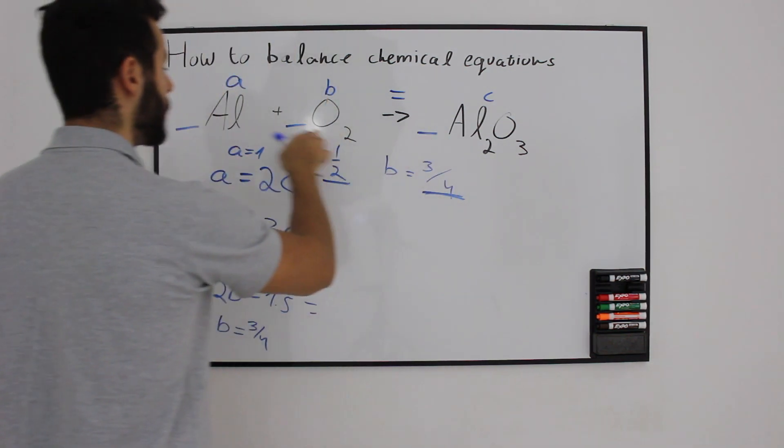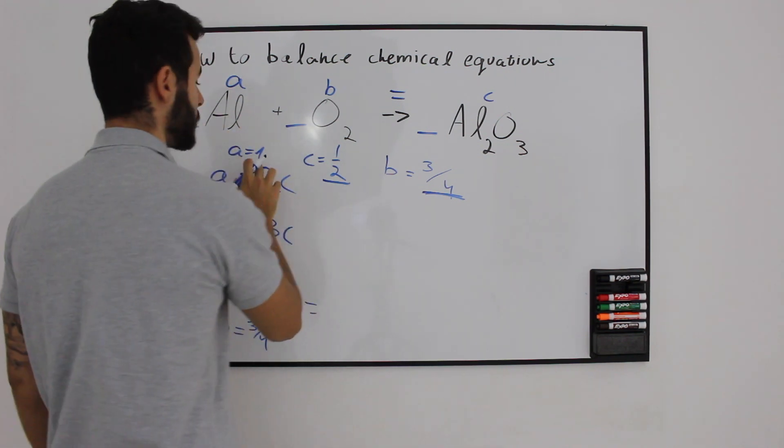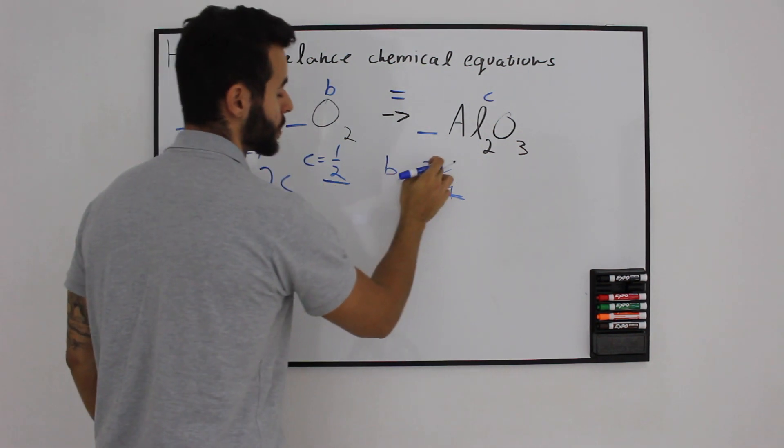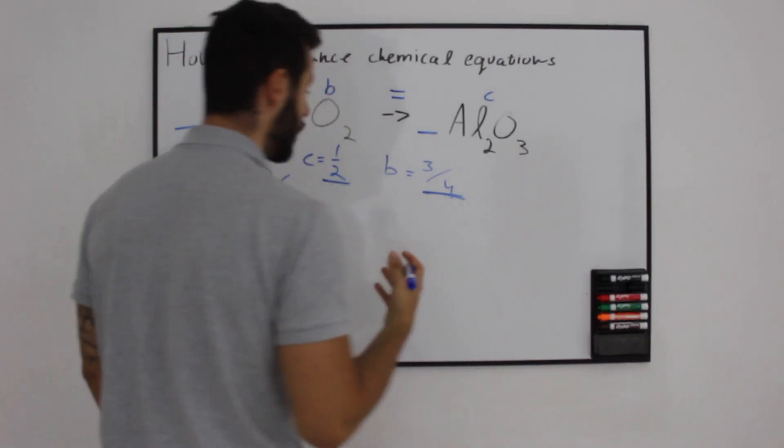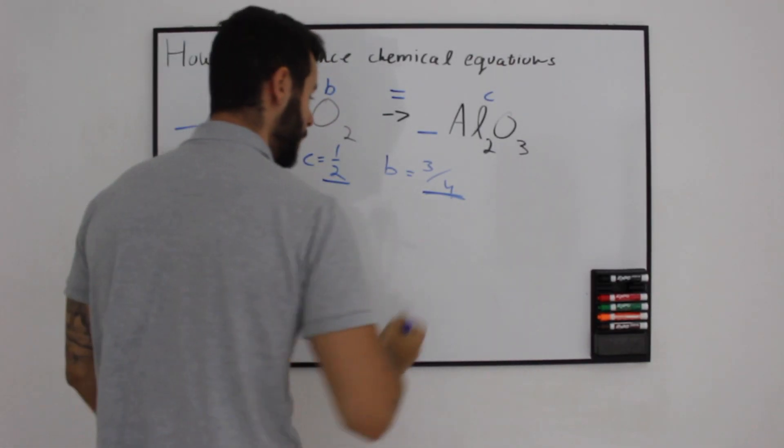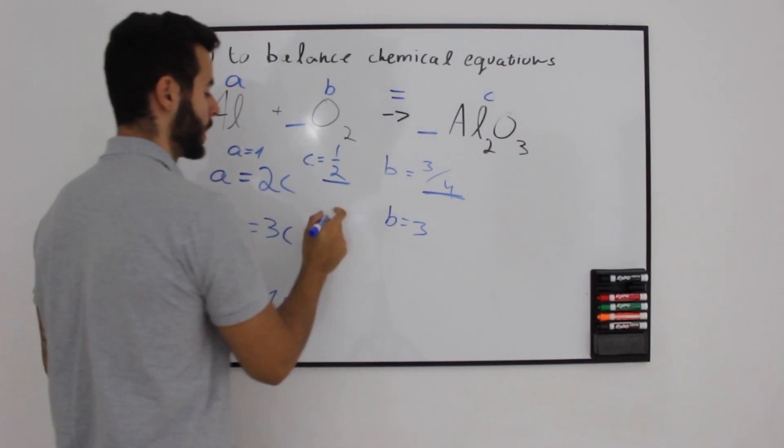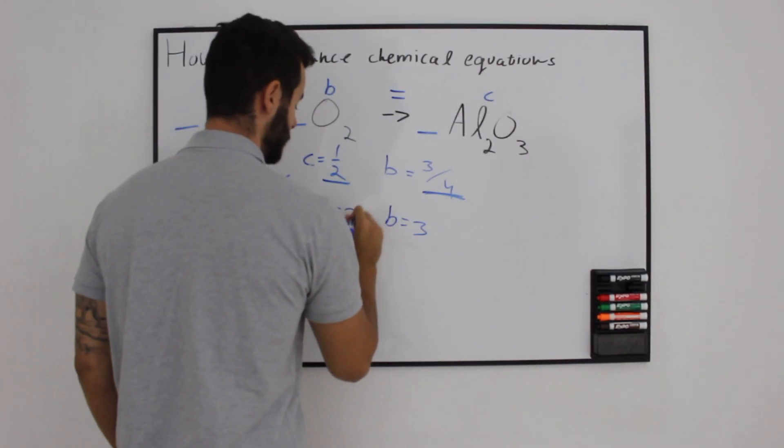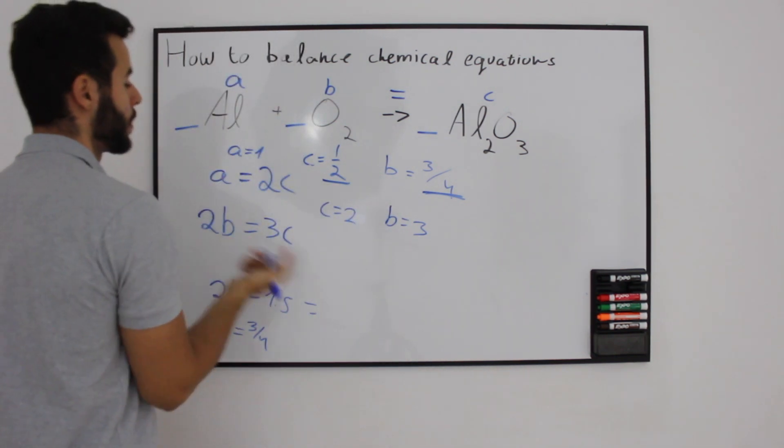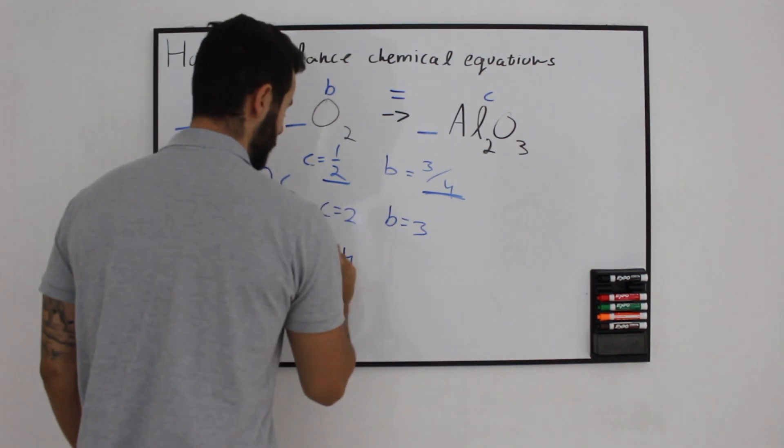So the only thing we have left is to find the common denominator between the following variables. If A equals 1, C equals half, and B equals 3 quarters, we are going to multiply everything by 4 because this is the common denominator. So B times 4 equals 3, C times 4 equals 2, and A times 4 equals 4.